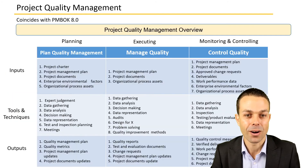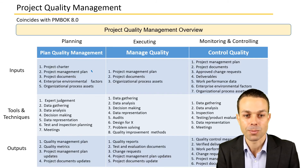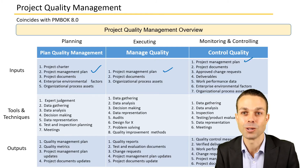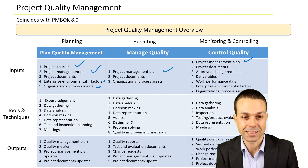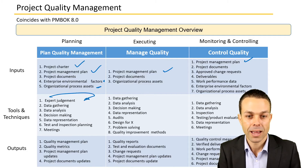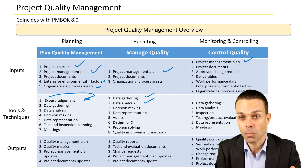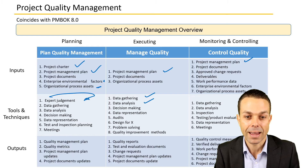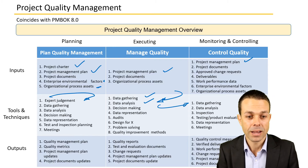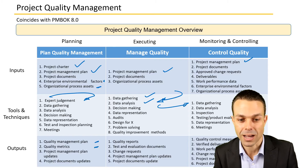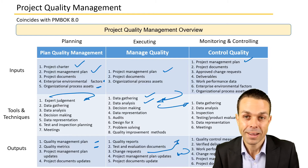There are plenty of inputs, tools, techniques, and outputs overall for project quality management. We've got the project management plan as an input into almost every process, the project charter, enterprise environmental factors, and organizational process assets. Expert judgment makes a big appearance, along with lots of data gathering and data analysis on how quality and testing or inspection is going. Outputs include the quality management plan, quality metrics, project document updates, and any change requests if defects are found during testing.